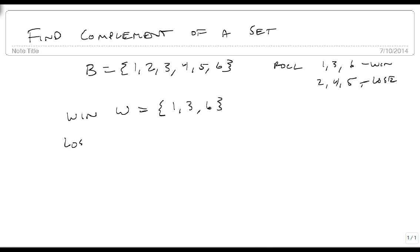And the loss, if you lose, that could be defined as 2, 4, 5. Now, notice that as we're looking here, these two together make up the full set. And so if we were to union them, we get the full set. But if we were to intersect them, they wouldn't.